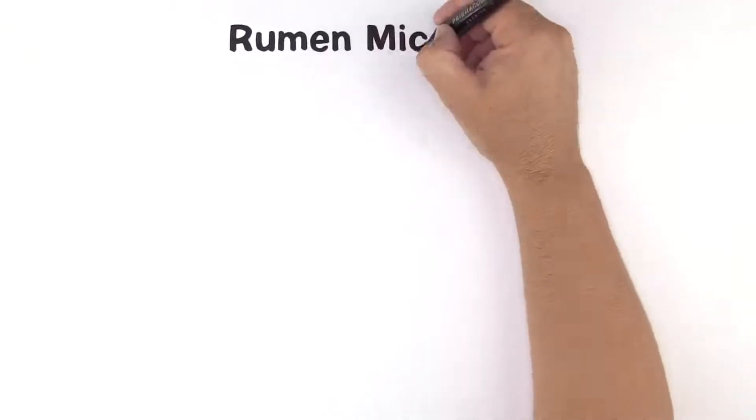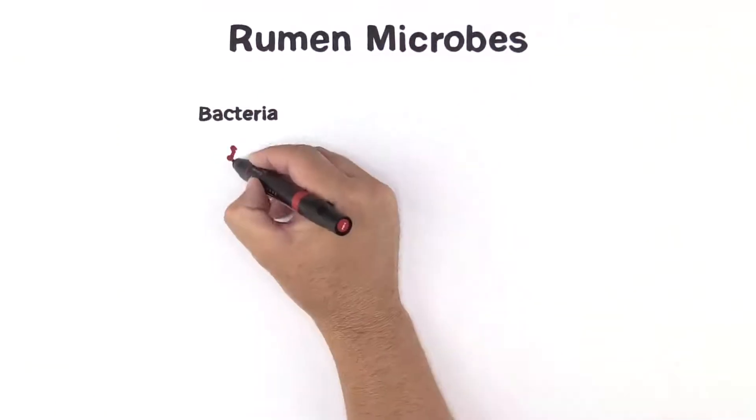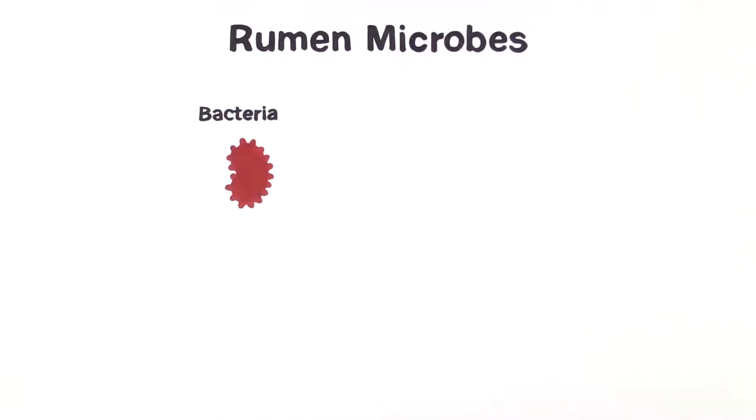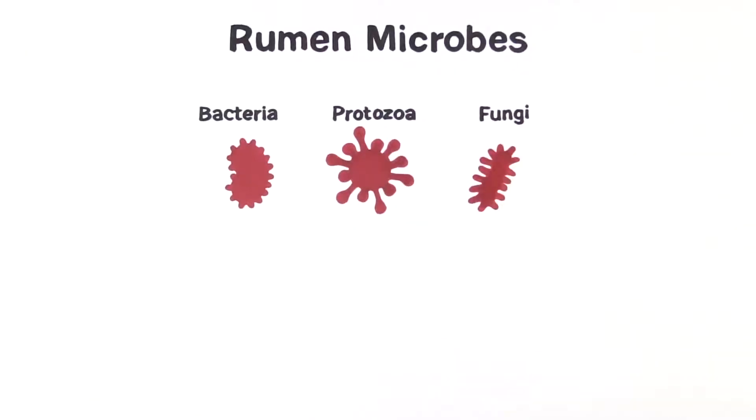Each type of microbe plays a critical role. Let's break it down further. Bacteria carry out most of the digestion of sugars, starch, fiber, and protein for the cow. Protozoa swallow and digest bacteria, starch granules, and fiber. And fungi open up plant fibers to make them more easily digestible.